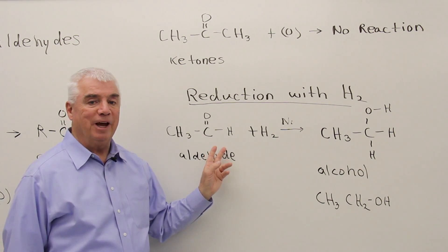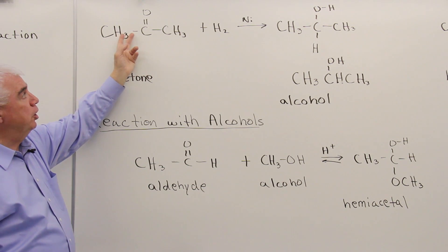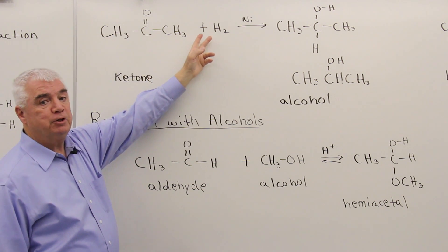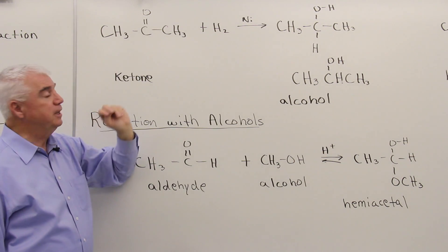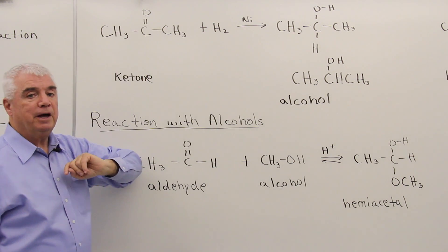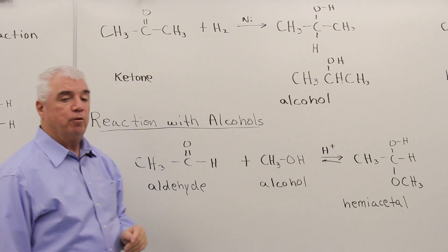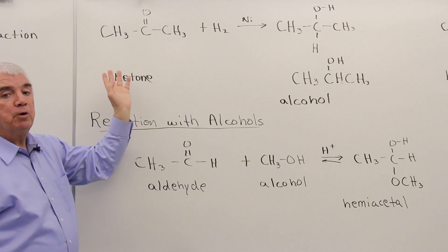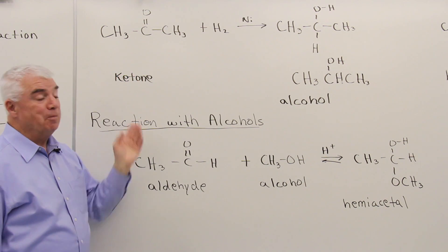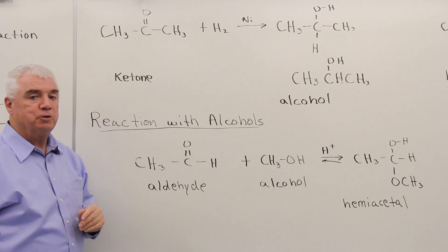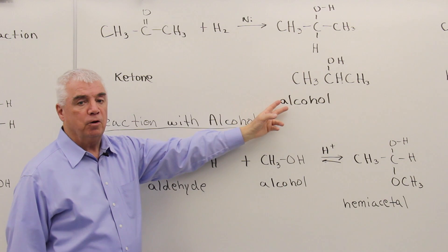Ketones undergo a similar reaction. Let's look at that. Ketones with the C double bond O can react with hydrogen, nickel catalyst. And again, the double bond is going to disappear. The carbon will pick up one of the hydrogens, the oxygen the other. And so the structure that we have over there is an alcohol. I like to remember reactions in words. I think your mind, at least my mind, works in words rather than structures. And in words, a ketone plus hydrogen gives me an alcohol.